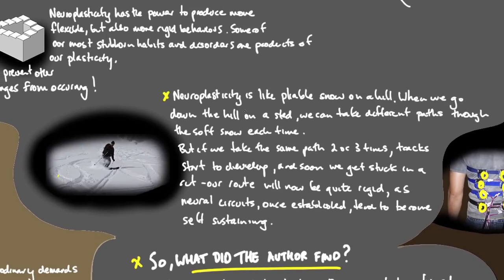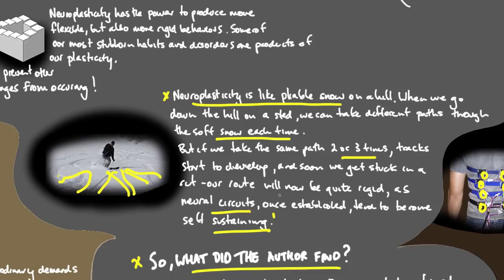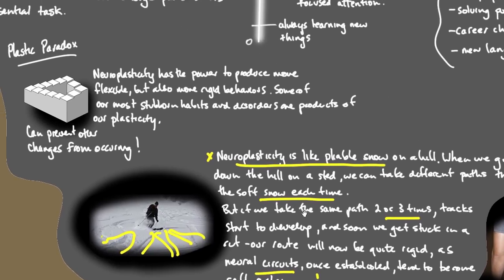One analogy that I loved is that neuroplasticity is like pliable snow on a hill. When we go down the hill on a sled, we can take different paths through the soft snow each time. But if we take the same path two or three times, tracks start to develop and soon we get stuck in a rut. Our route will now be quite rigid as neural circuits, once established, tend to become self-sustaining. We have a tendency that once we form a route, we go down that because we're safe in the knowledge that we've used it before.